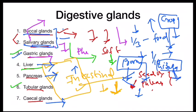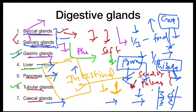From the proventriculus, food reaches the gizzard where mechanical digestion takes place with the help of stones. The incomplete chyme is then released into the intestine, where complete digestion takes place. Hepatic juices, pancreatic juices, and intestinal juices digest the incomplete food. The ileum has internal foldings that help absorb nutrients. The undigested fecal matter reaches the rectum, where water absorption and some digestion by the rectal or cecal glands occurs.